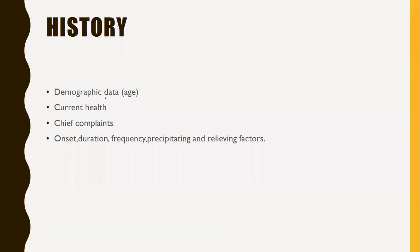In the history, you should collect data regarding age, as age is an important factor in ear diseases. As age increases, the patient may experience deterioration in hearing. You should also note current health status and the chief complaints on admission, focusing on the onset, duration, frequency, and precipitating factors. For example, if a patient has hearing loss, you should collect the onset - whether it started suddenly or gradually.